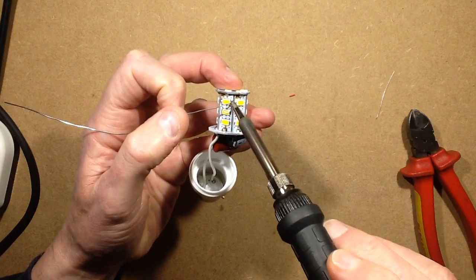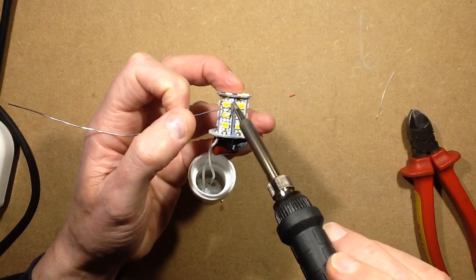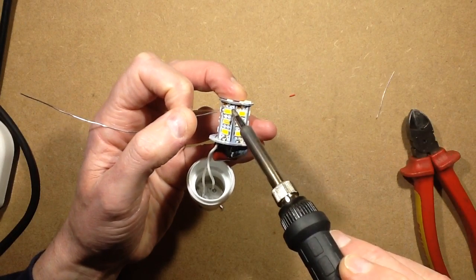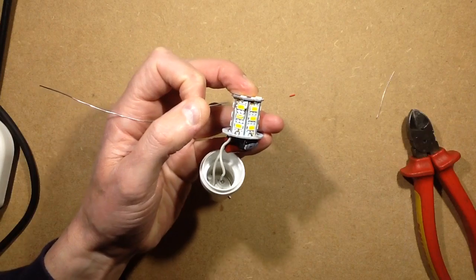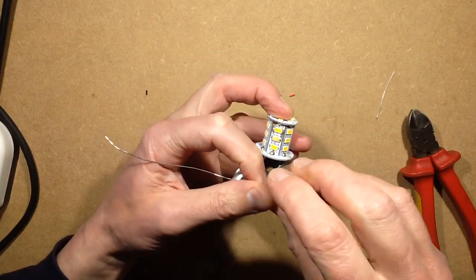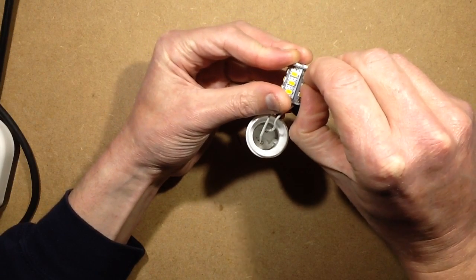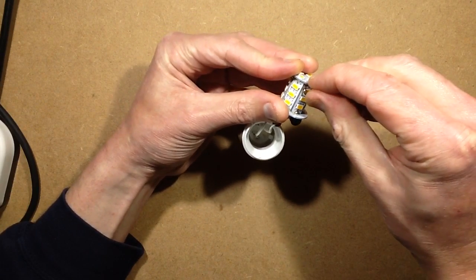And then I'm going to solder the other side. Looks pretty good. I'm going to let the solder cool for a second. And then I'm just going to fold that link up out of the way of the other LED and just fold it over the dead one.